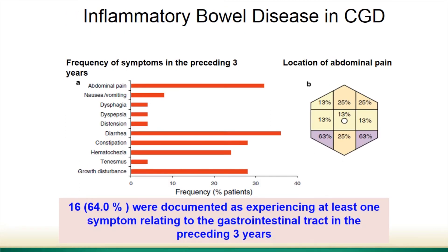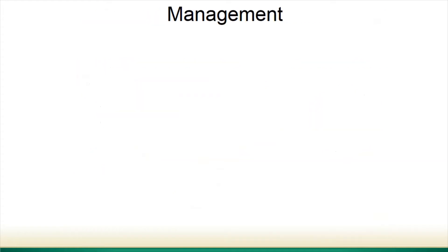Inflammatory bowel disease in CGD is a very common problem, occurring in approximately 35 to 50% of patients. The symptoms are not specific to CGD and overlap with patients who have IBD from Crohn's disease or other causes — including abdominal pain, nausea, growth disturbance, and diarrhea. Dr. Zerbe will go into a lot more detail about inflammatory bowel disease in CGD.